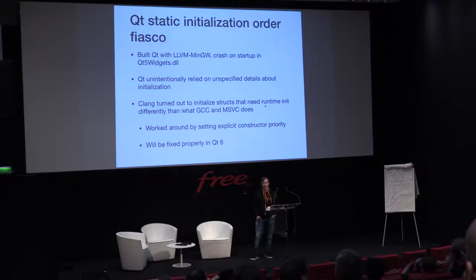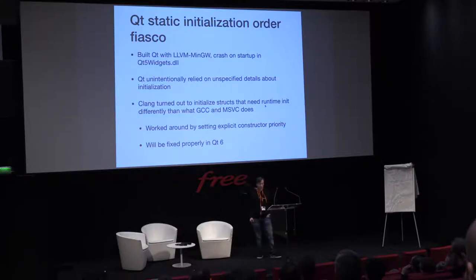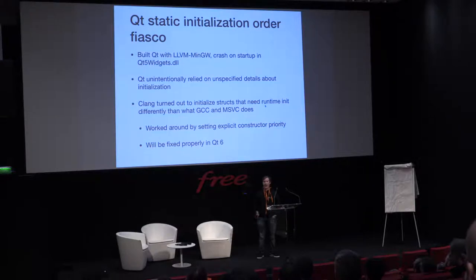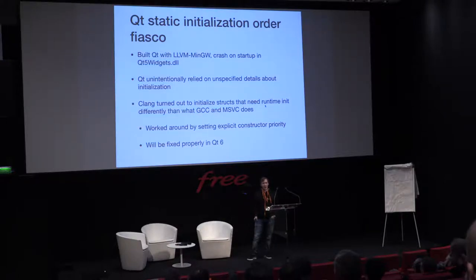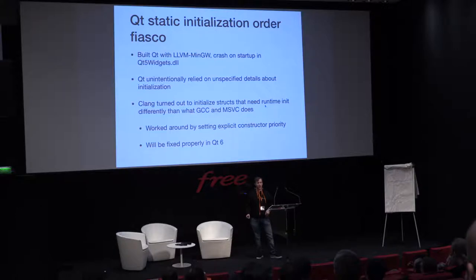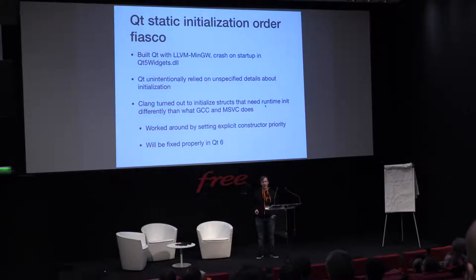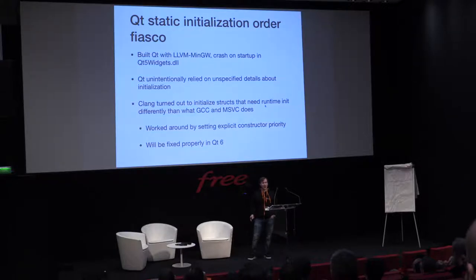Then with things compiling more or less, we tried to build Qt, which VLC uses for the GUI. It built fine after some tweaking, but it crashed on startup. The short version is that Qt unintentionally relied on unspecified behavior — when loading the executable, the DLL loader runs constructors in an undefined order, and some of them unintentionally relied on the compiler partially initializing some structs in a specific way. This works with GCC/MinGW, but Clang — totally compliantly and correctly — did things differently, and this broke.